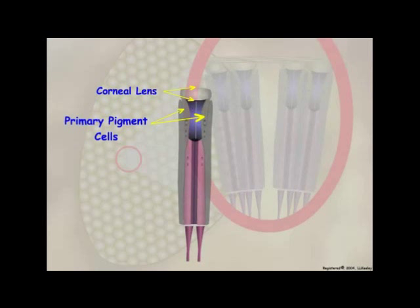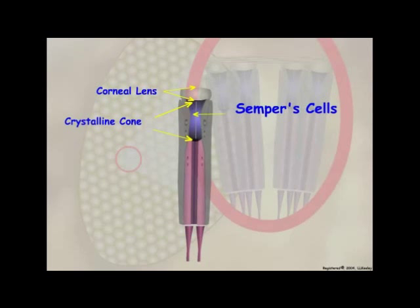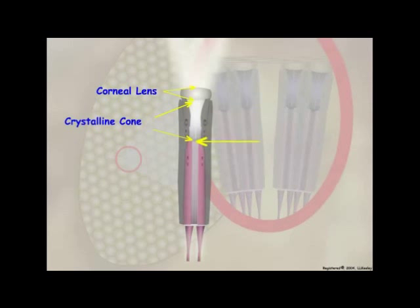Below the corneal lens is the crystalline cone. This structure is either secreted or formed by four cells called Semper's cells. Light enters the corneal lens and is focused on the light-detecting apparatus by the crystalline cone.